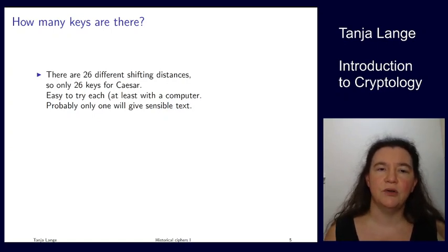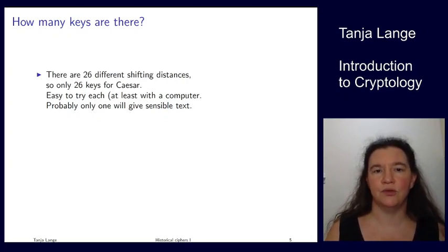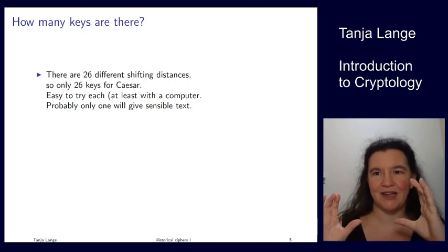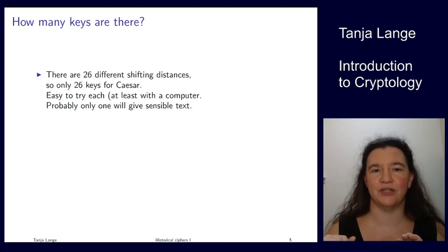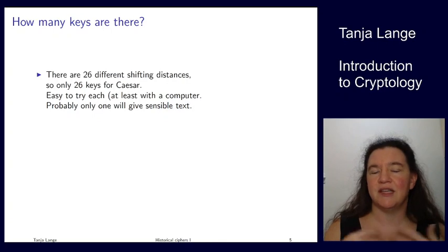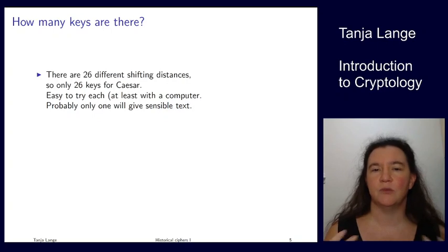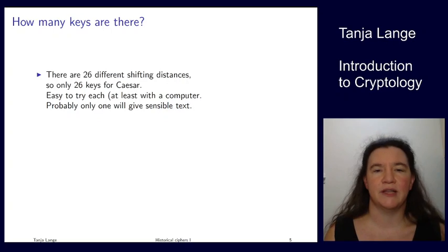An important question for the security of a system is: how many keys are there? What is the key space — the possibilities an attacker must search through? For Caesar, you have the base situation plus 25 more shifts, so there are only 26 keys, one of which is even the identity map. It's very easy to try all of them with a computer — only one will give anything sensible.